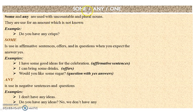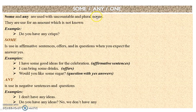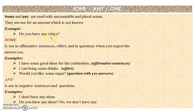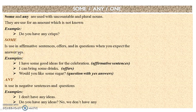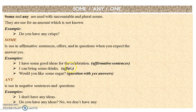Now we have some information on some, any, and one. Some and any are used with countable plural nouns for an amount which is not known. Some is used in affirmative sentences, offers, and in questions when you expect the answer yes. For example: 'I have some good ideas for the celebration' — affirmative sentence. 'I can bring some drinks' — an offer. And 'Would you like some sugar?' — a question expecting a yes answer.